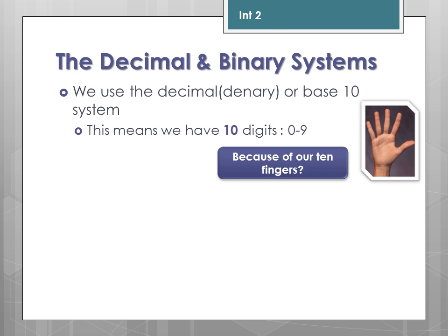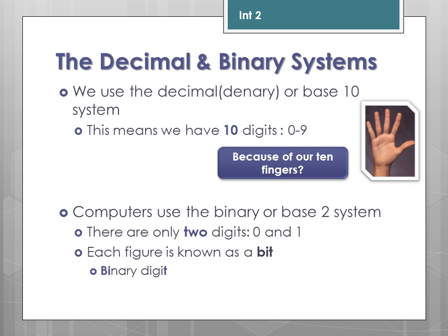The decimal and binary system. We use the decimal or base 10 system, which means there are 10 possible digits, 0 to 9. Is this because of 10 fingers? Possibly. However, computers use a binary or base 2 system. This means there are only two digits that any computer can deal with: 0 and 1, standing for off and on. Each figure is known as a bit, and a bit stands for binary digit.